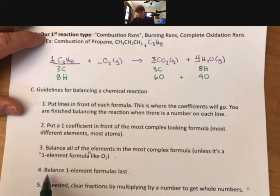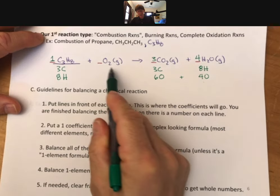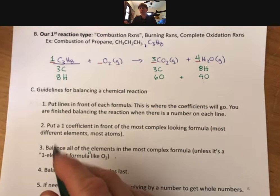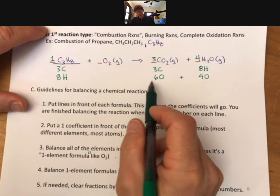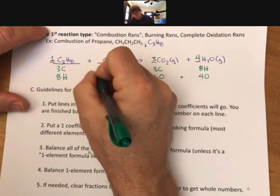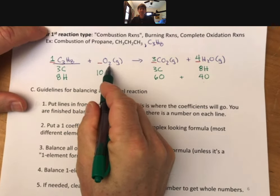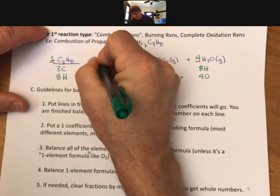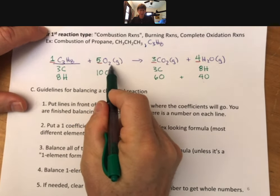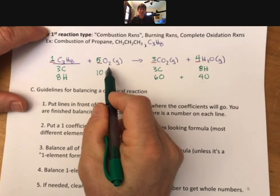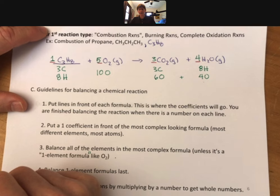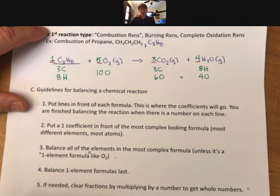I will now balance my one element formula last and whatever number I put here I'm just going to balance these and because it's a one element formula it doesn't mess any other elements up. So I need ten oxygens here. Oxygens come two at a time therefore I'm going to put a five here and I always like to double check that five times two is ten and everything is balanced. That is the balanced chemical reaction for the combustion of propane.